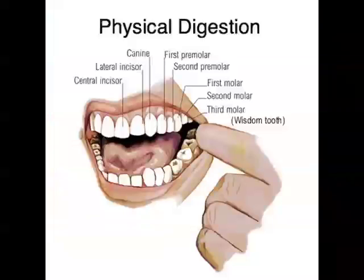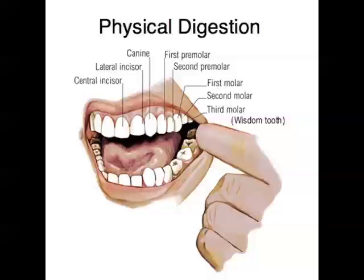The other type of digestion is physical or mechanical digestion, where food is physically broken up. The main way this happens in humans is with your teeth — you physically grind up food in your mouth. Your stomach muscles also churn the food around, so they also do some physical digestion. So chemical digestion uses enzymes, while physical or mechanical digestion uses your teeth or muscles.